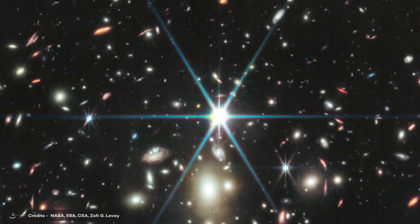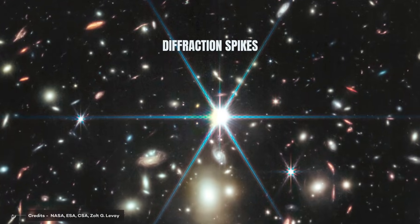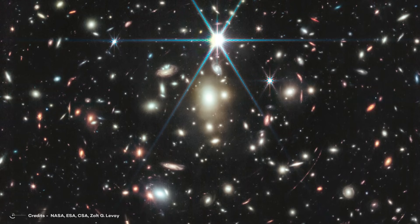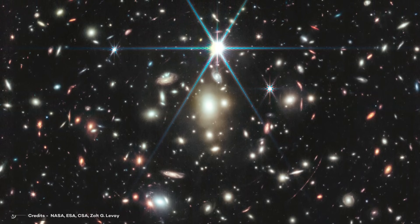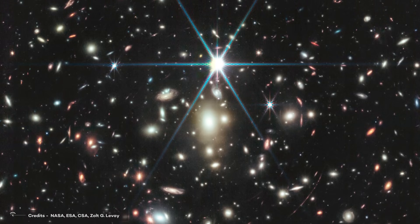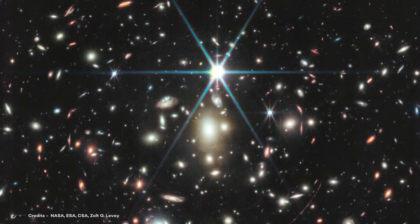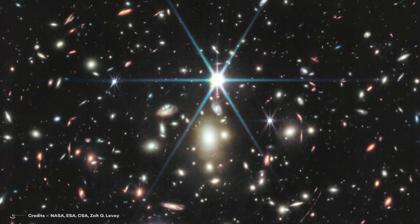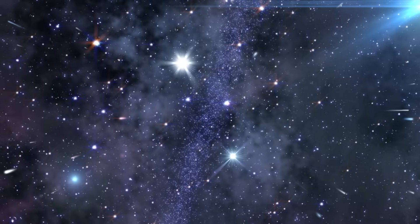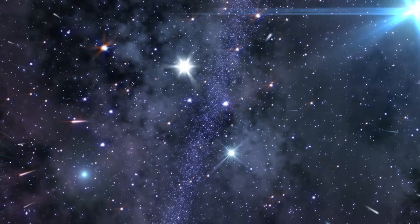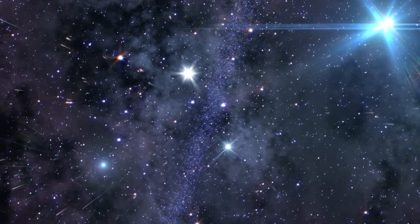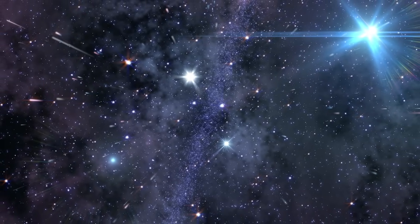These spikes are an optical artifact known as diffraction spikes, which are caused by the telescope's design. If astronomers observe a star with six spikes in Webb's images, it serves as a visual cue that the star is part of our Milky Way galaxy. This phenomenon is a product of the telescope's optics and is not present in stars from other galaxies captured in the telescope's images. It's an interesting feature that aids astronomers in differentiating between stars within our galaxy and those in more distant galaxies when analyzing James Webb Space Telescope observations.